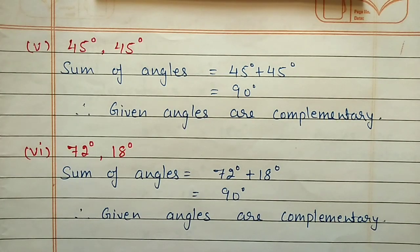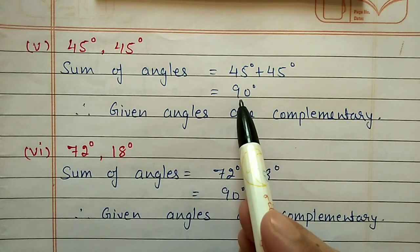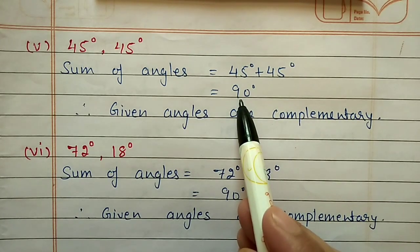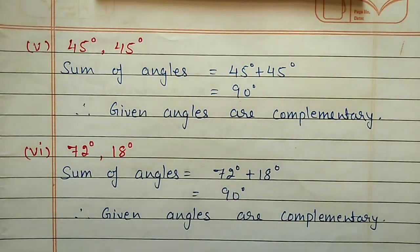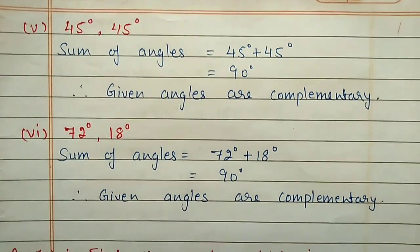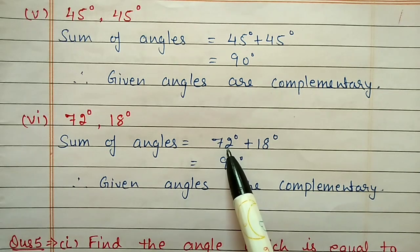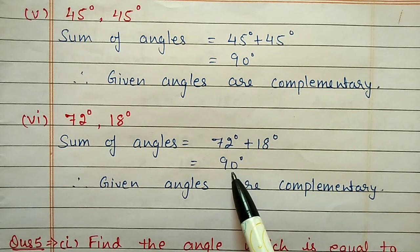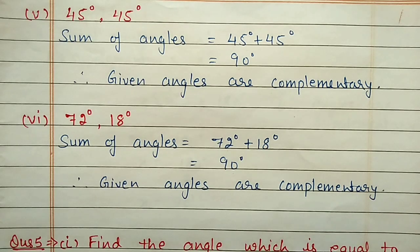Fifth part: 45 degrees and 45 degrees. After adding 45 and 45, we get 90 degrees, so these two angles are complementary angles. Sixth part: 72 degrees and 18 degrees. After adding 72 and 18, we get 90 degrees, so these two angles are complementary angles.